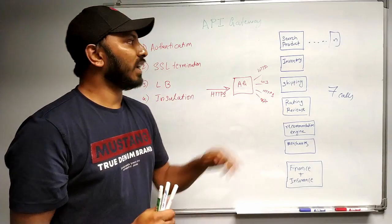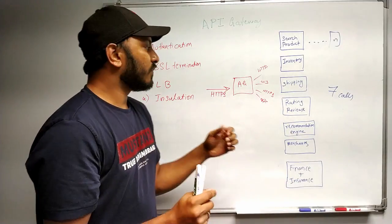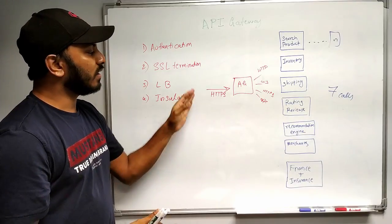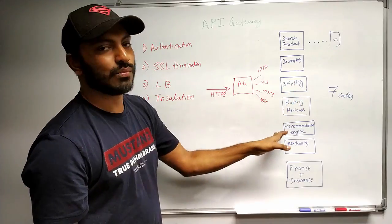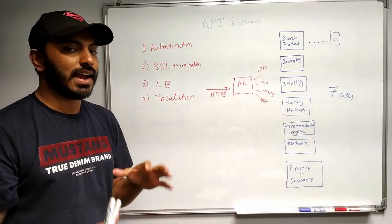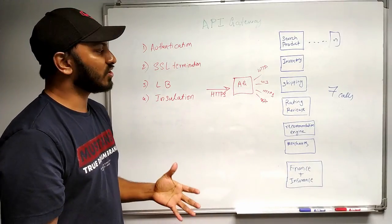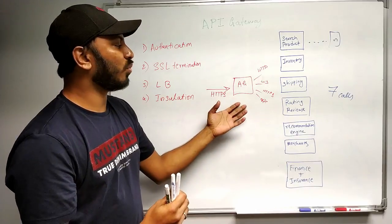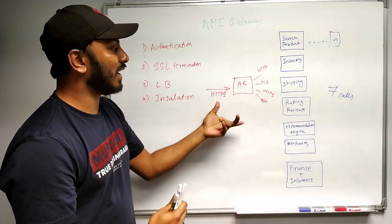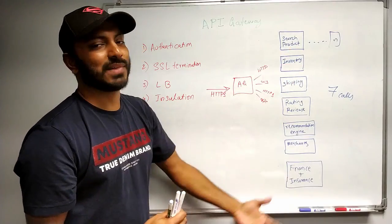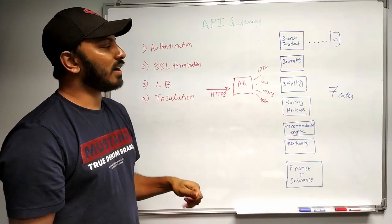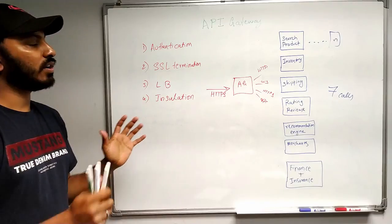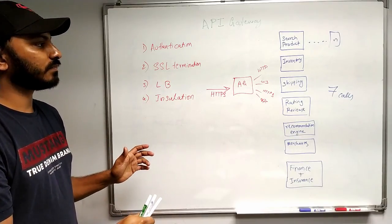Now, what are the disadvantages of API Gateway? The first disadvantage is it increases the number of hops. Instead of directly accessing a service in one call, now there's one hop to the API Gateway and from the API Gateway another hop to the microservice, which could add a little bit of latency. The other disadvantage is the system gets more complicated — you have to configure the API Gateway, make it highly available, and maintain all of these microservices. It looks complex. So these are the drawbacks of using API Gateway, but I think you now understand what exactly API Gateway does.